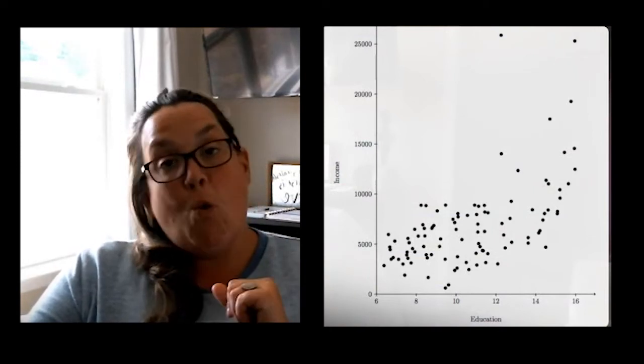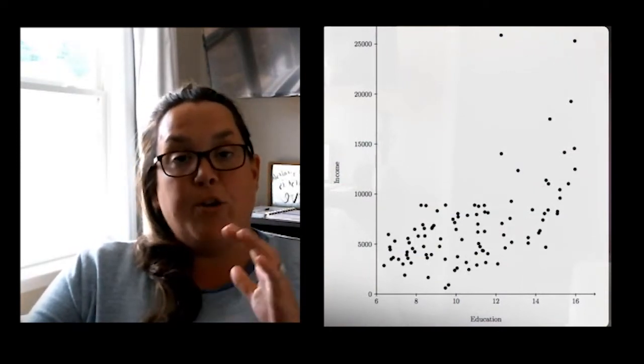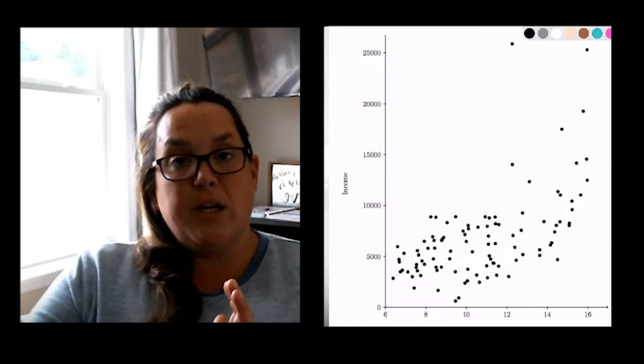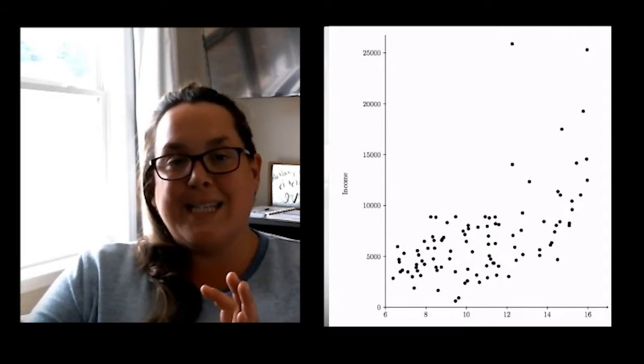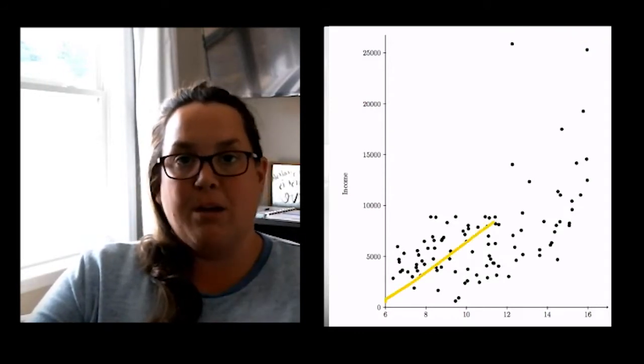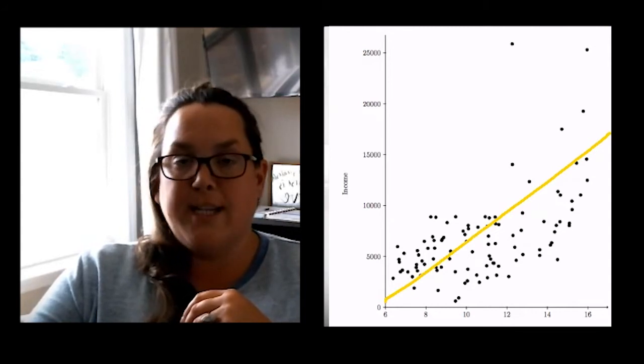Question number two, what is the pattern? When you look at this scatterplot, what do you see? I think I can see kind of a line forming, so we would call that linear. Let's write that down.